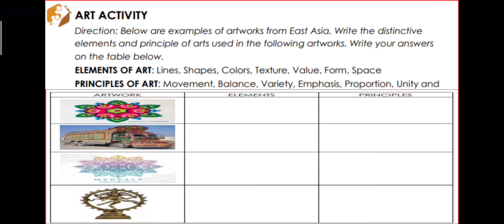For the arts activity this week, below are examples of artworks from east Asia. You have to write the distinctive elements and principles of art used in the following artworks and write your answers on the table. Look for the lines, shape, colors, texture, value, form, and space for the elements of art, and movement, balance, variety, emphasis, proportion, unity, and harmony for the principles of art. Write your answers on a piece of paper, take a picture, and send it on Messenger.